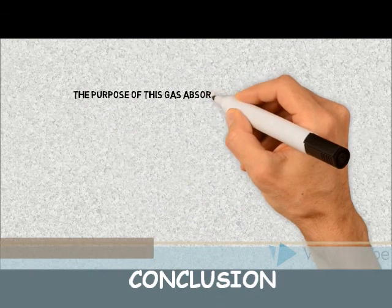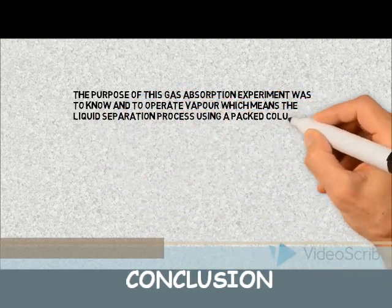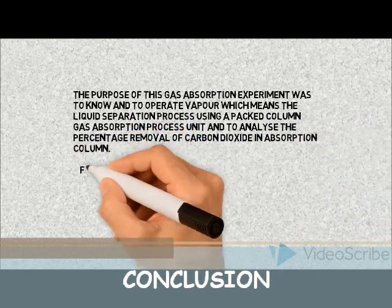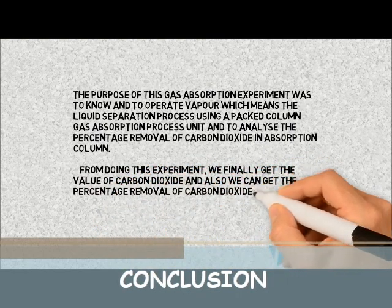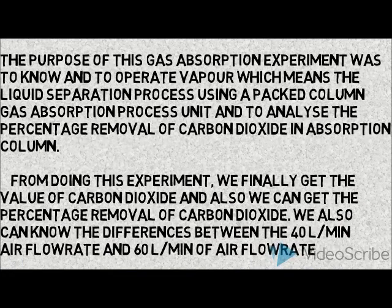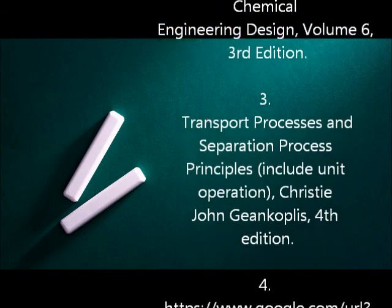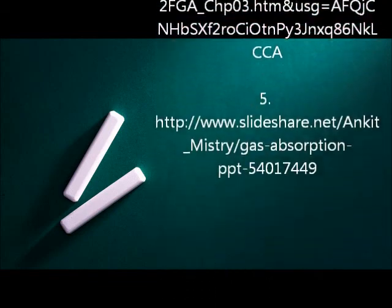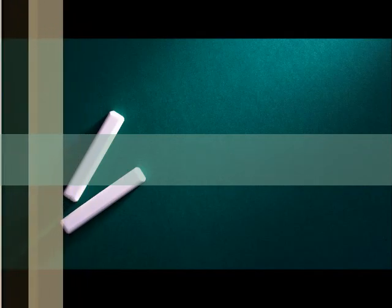The purpose of this gas absorption experiment was to know and to operate the liquid separation process using a packed column gas absorption process unit, and to analyze the percentage removal of carbon dioxide in the absorption column. From doing this experiment, we obtained the value of carbon dioxide absorbed and the percentage removal of carbon dioxide. We were also able to note the differences between the 40 L per minute air flow rate and the 60 L per minute air flow rate results.